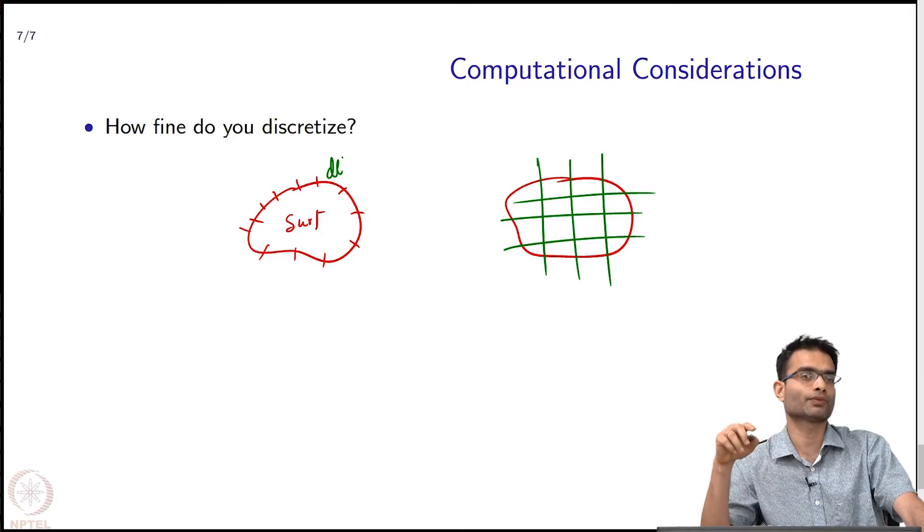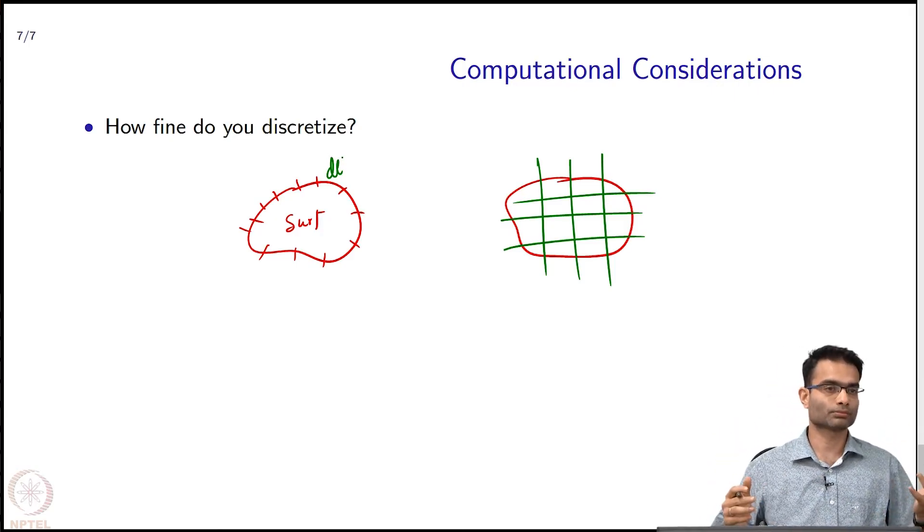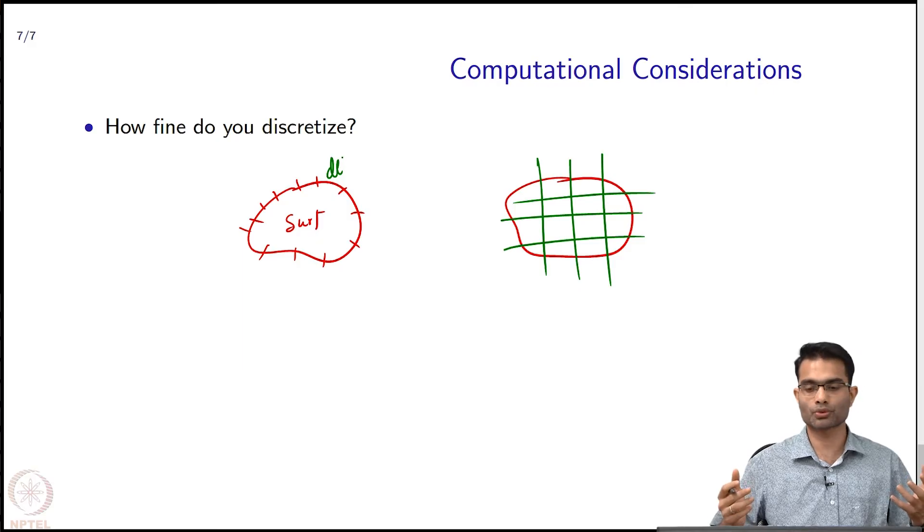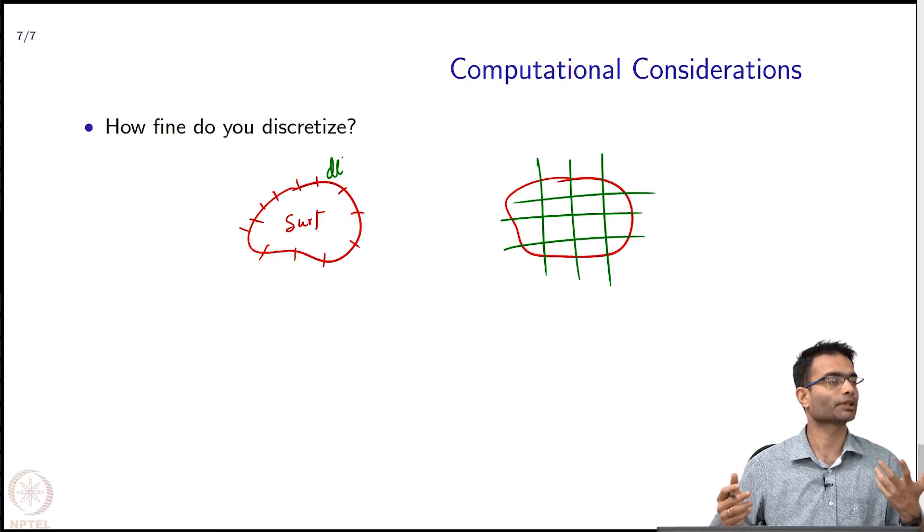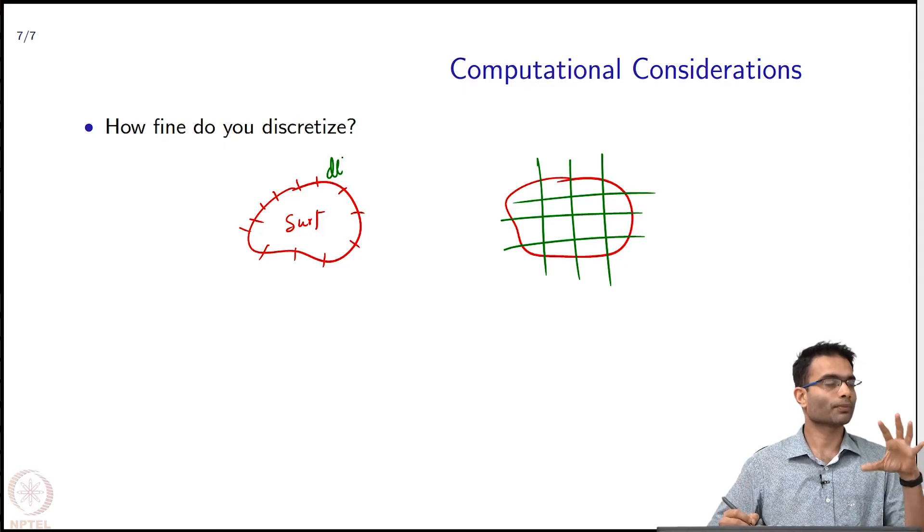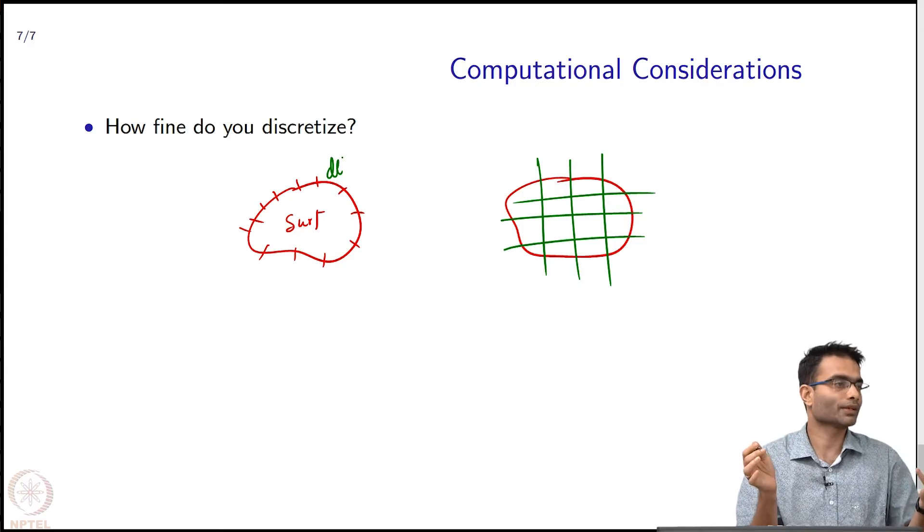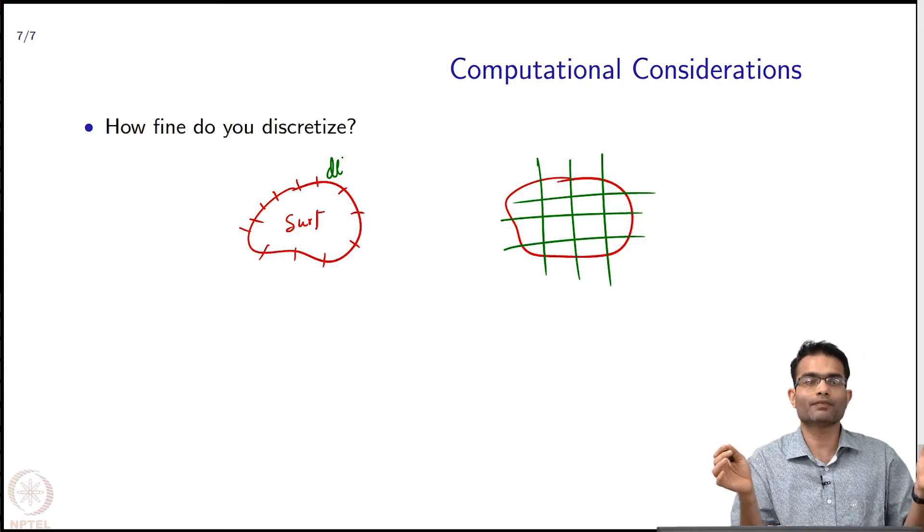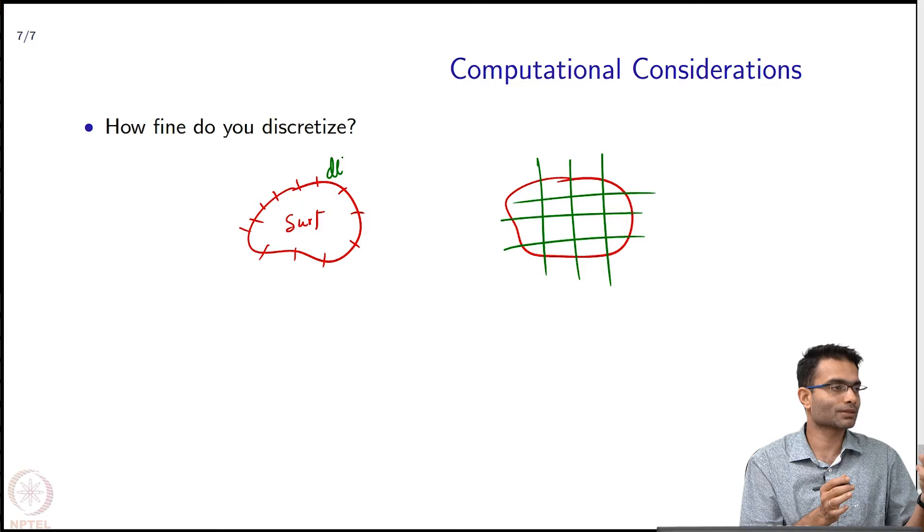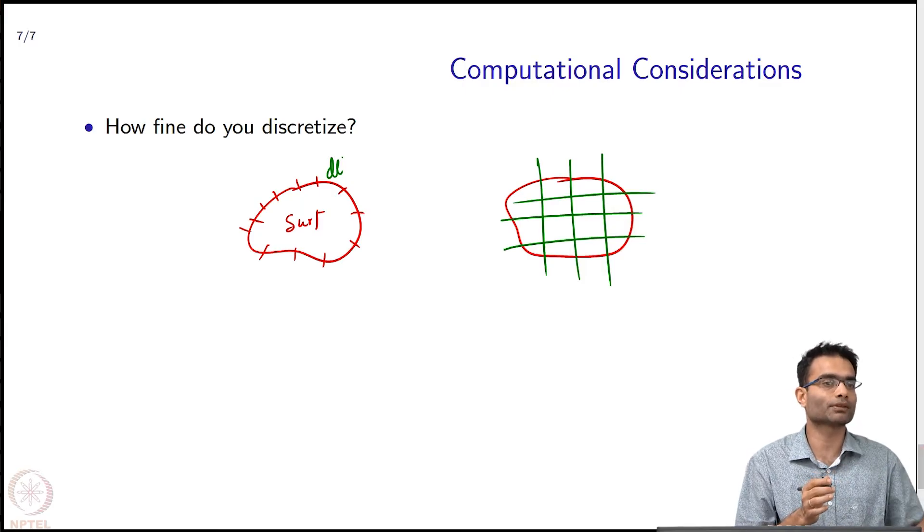Let's say you studied these two methods, you coded them up, and you got some solution. How do you know whether you chose a DL to be fine enough or not? That seems to be an important question, because if you choose the wrong DL, if you choose it to be too coarse, then you're not representing the fields correctly. On the other hand, if I make DL very very fine I will get the correct answer, but it may take me 10 times more time on the computer than I should have spent on it.